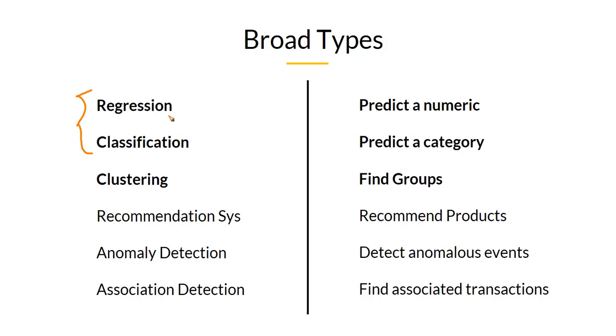What does regression mean? Whenever a given machine learning problem involves predicting a numeric quantity, we call it regression. Whenever you are trying to predict a numeric number, it is regression. Likewise, whenever you are trying to predict a category, we call it classification.